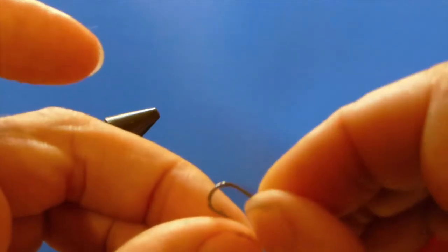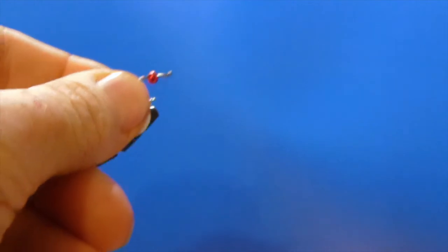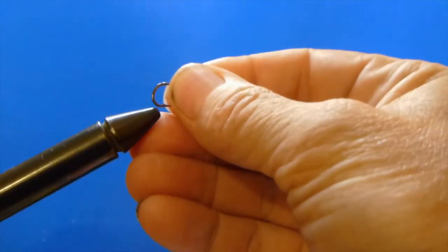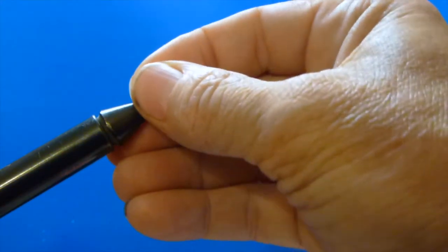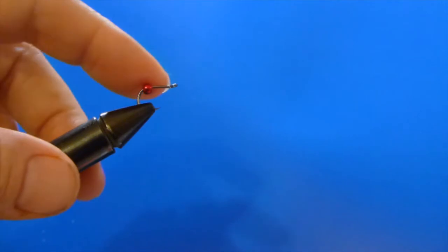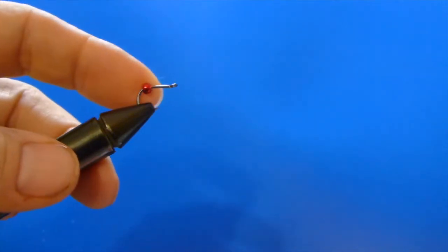You want it to touch bottom from time to time, kind of be rolling around, kind of like a nightcrawler would be if you threw it into a stream or river. So I'm going to take the bead and string it on the hook itself. We'll affix that right into the vise. And then we'll tie our thread in behind the bead.